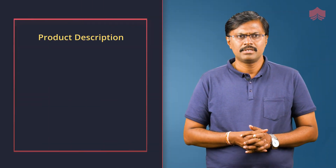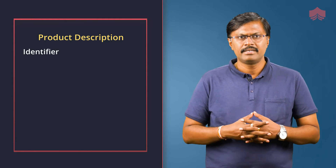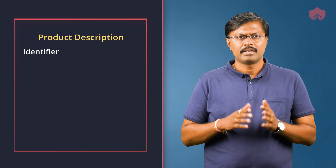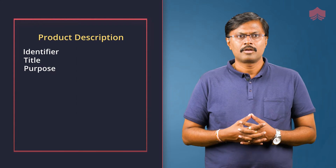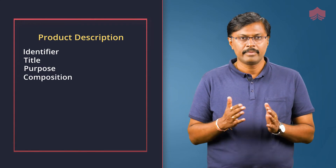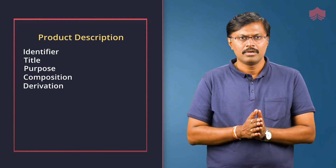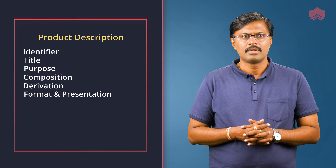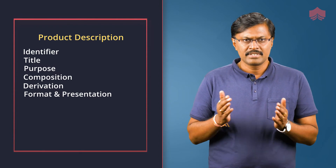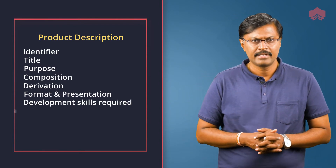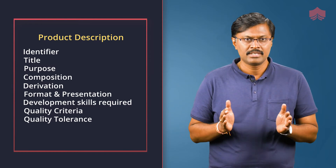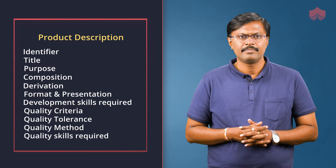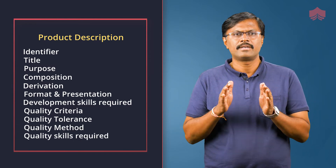A product description should capture: product identifier, title, purpose, composition, derivation, format and presentation, development skills required, quality criteria, quality tolerance, quality methods, quality skills required, and quality responsibility.